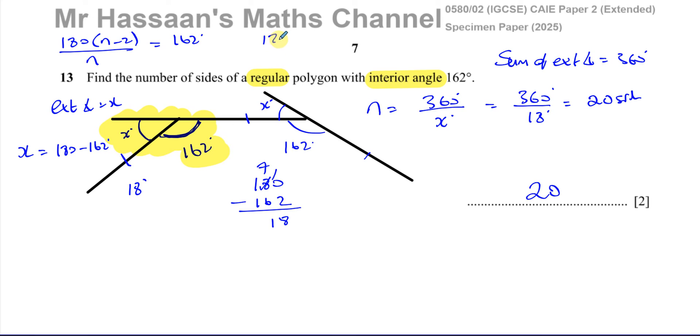When you solve this equation, you will get that same answer. So you have 180n minus 360 equals 162 times n. Then you have 180n minus 162 gives you 18n equals 360. Then the rest is the same, n equals 360 divided by 18. Both methods are fine, but I think thinking in terms of exterior angles makes life easier.